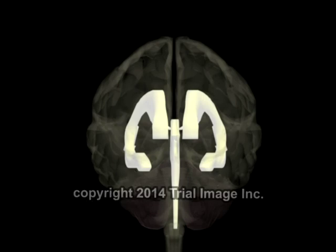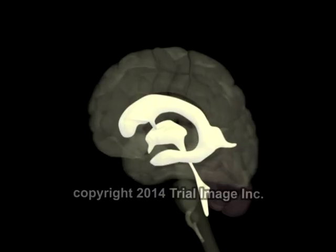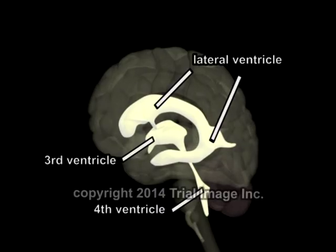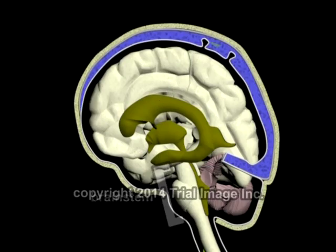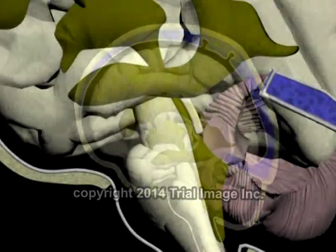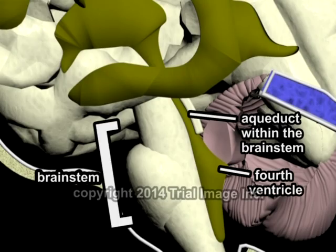The largest of these chambers are called the lateral ventricles. Rotating to a side view looking from the left, we see the lateral ventricle connected to the third and fourth ventricle. The third and fourth ventricles are connected by a narrow passageway known as the aqueduct. Obstruction to flow of CSF within the aqueduct is one of the most common causes of hydrocephalus. The brainstem represents the lowermost portion of the brain and connects the brain to the spinal cord. Here we see a close-up view of the relationship between the aqueduct, the fourth ventricle, and the brainstem. As can be seen here, the aqueduct actually lies within the substance of the brainstem.